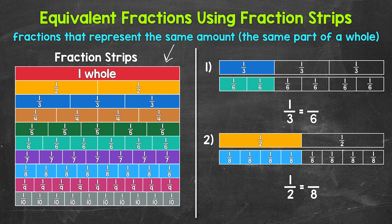Here are the fraction strips we are going to use in this video. We start with one whole, and everything is based off of this whole rectangle. Then we have the whole rectangle divided into two equal parts — so halves. Then the rectangle is divided into three equal parts — so thirds. Then four equal parts, and so on and so forth, all the way down to ten equal parts.